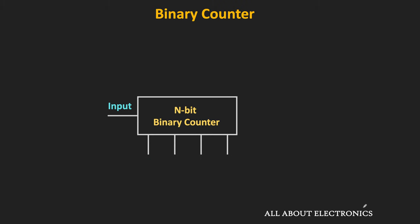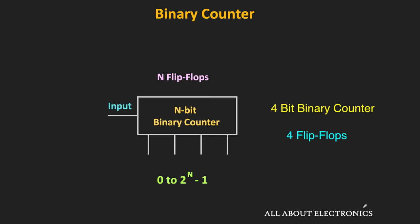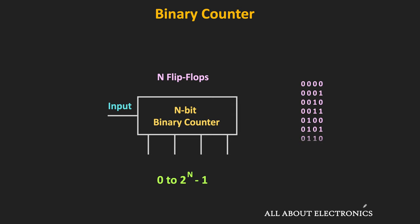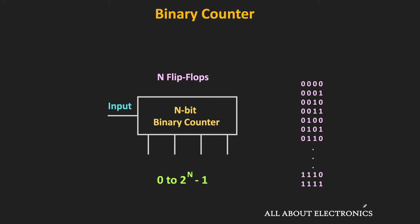If we have an n-bit binary counter, then it consists of n flip-flops, and starting from 0, this counter can count up to 2 to the power n minus 1. For example, a 4-bit binary counter will have 4 flip-flops inside it and can count from 0 to 15. If the count goes from 0000 to 1111, that counter is known as the up counter. But if it counts in the downward direction, from 1111 to 0000, then it is known as the binary down counter.